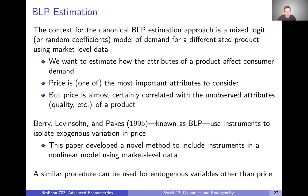Attributes of alternatives are varying at the market level. We have a bunch of different products that consumers are thinking about purchasing, and we're going to have a mixed logit model of demand for those products. We want to estimate how the attributes of a product affect consumer demand. One of the most important attributes to consider is price. But price is almost certainly correlated with unobserved attributes like quality. So Berry, Levinsohn, and Pakes in their 1995 paper — now known as BLP — use instruments to isolate exogenous variation in price. This was particularly novel: a novel method to include instruments in a non-linear model using market-level data.